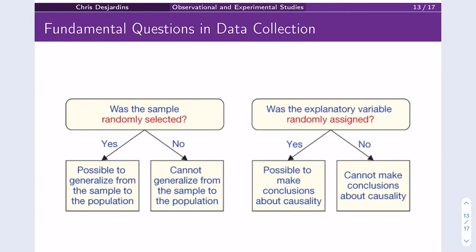When we're collecting data, two big things happen: we need to take our random sample and then we need to do random assignment if we can. This comes from a figure in the textbook. Was the sample randomly selected? If yes, it's possible to generalize from the sample to the population. If no, you cannot generalize from the sample to the population.